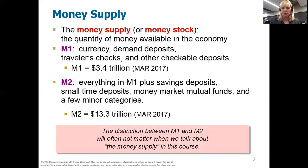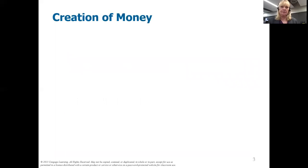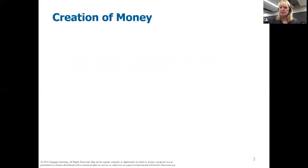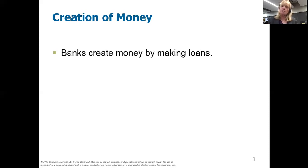The distinction between M1 and M2 is not something we'll focus on much in this class — I just wanted you to know the difference exists. Essentially from now on, when we talk about the money supply, we're talking about M1. So how is money created? If you're thinking about just the pieces of paper, the Treasury prints those. But that's really not the essence of what money is — money is much more than just those pieces of paper. In fact, bankable dollars are created by banks when they make loans. Banks are the ones that create money.